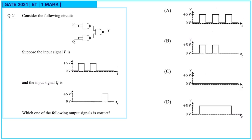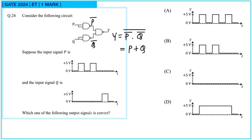Next question 24. Consider the following circuit. The input signal P and input signal Q are given. This circuit has a NOT gate, so this will be P bar and this will be Q bar, and this is a NAND gate. So Y is equal to NOT of (P bar AND Q bar), which according to De Morgan's theorem equals P OR Q. So this is an OR gate.